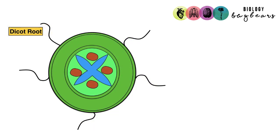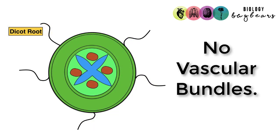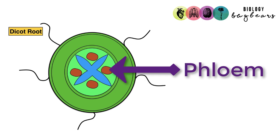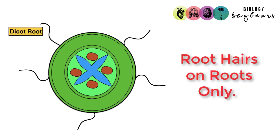This is the dicot root. You immediately notice there are no vascular bundles, which is how you know it's not a dicot stem. The xylem in the centre is arranged in a cross or star-like structure, and the phloem appears as brown structures surrounding it. You can also see the presence of root hairs. All of these features indicate this is a dicot root and not a dicot stem.